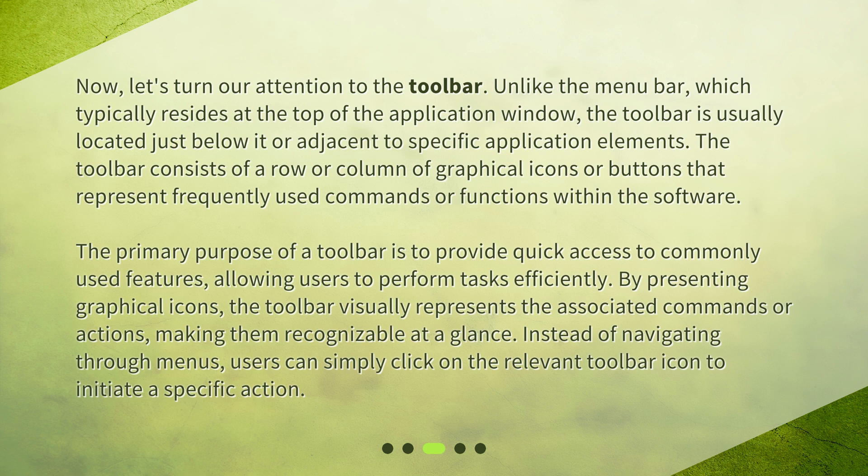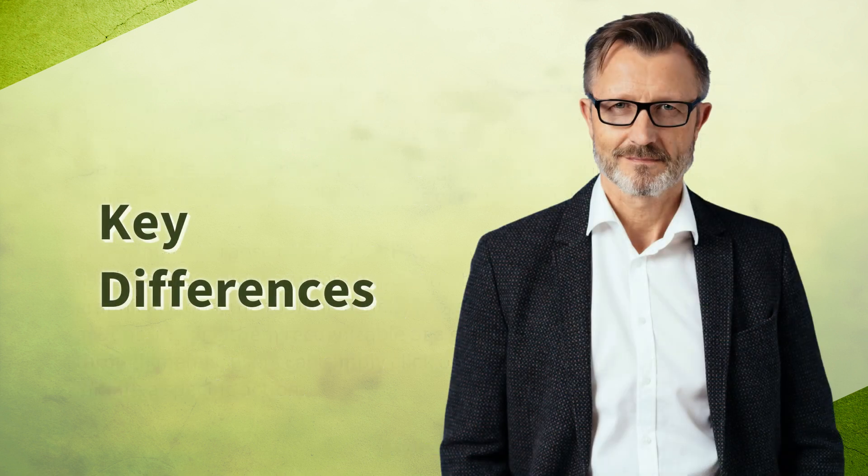The primary purpose of a toolbar is to provide quick access to commonly used features, allowing users to perform tasks efficiently. By presenting graphical icons, the toolbar visually represents the associated commands or actions, making them recognizable at a glance. Instead of navigating through menus, users can simply click on the relevant toolbar icon to initiate a specific action.